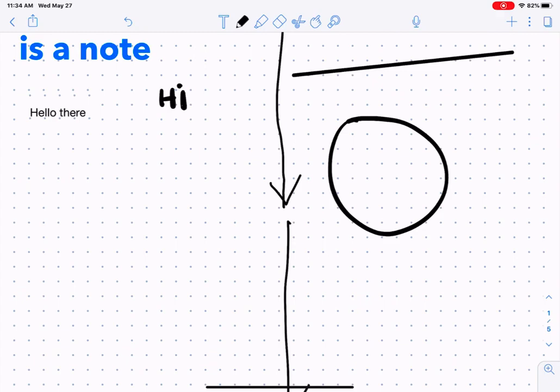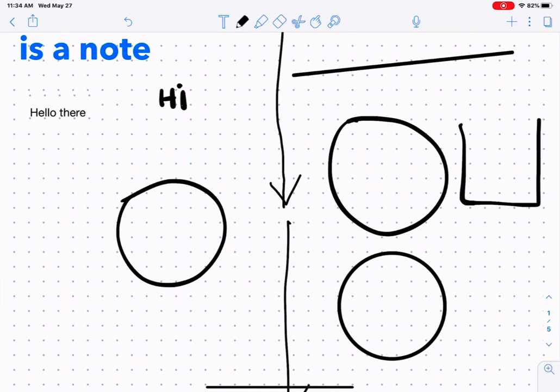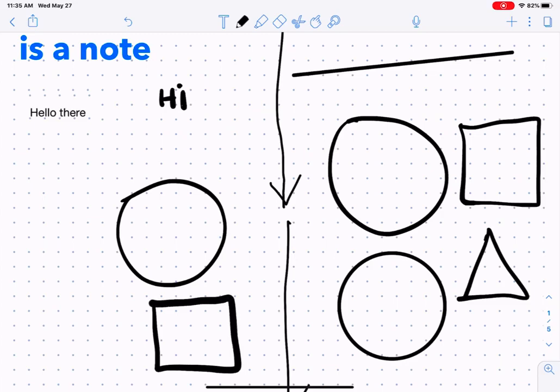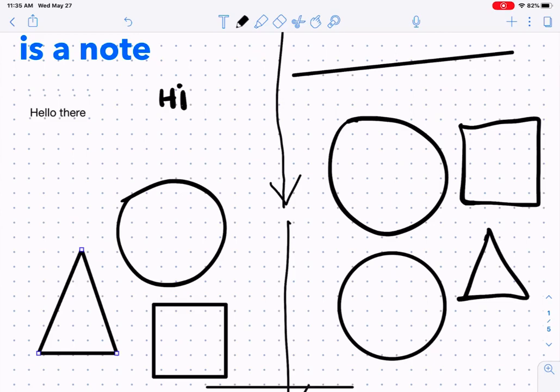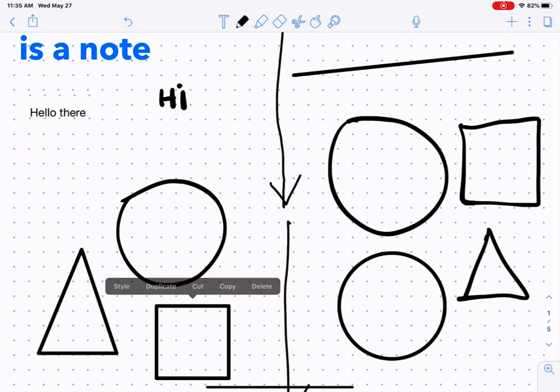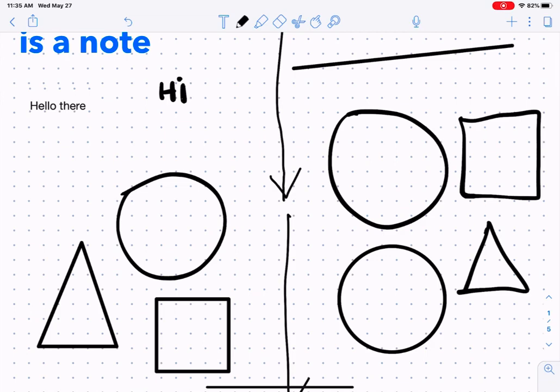And then I also had auto shapes turned on. So if I draw something that looks like a circle and keep my mouse down, it's going to auto draw the circle. If I just draw it, it's not going to auto correct it. I have to keep my pen held down for that auto shape to take effect. And then now this is a shape object on your screen, whereas the one that did not auto correct is just a drawing.